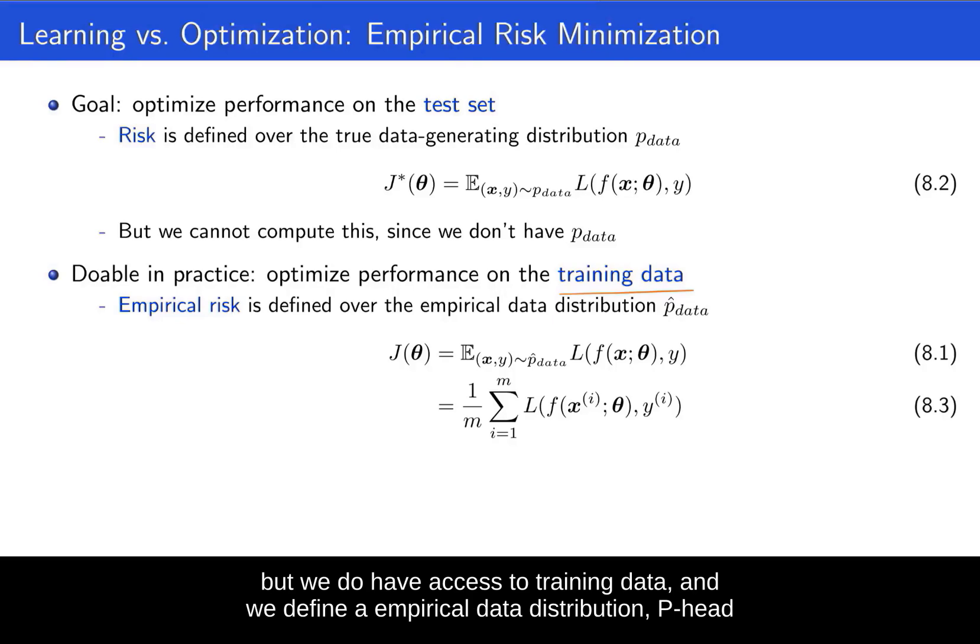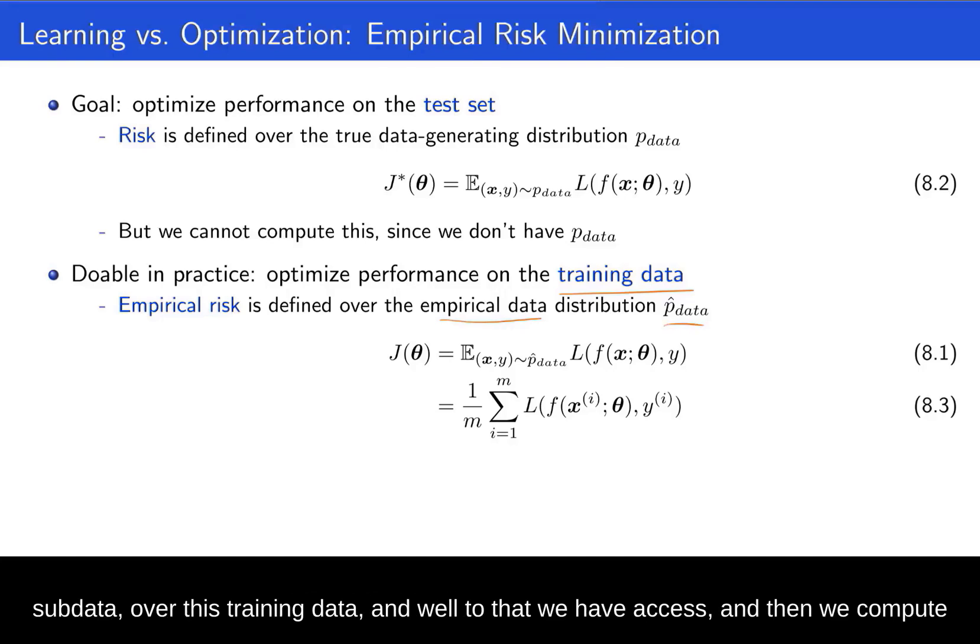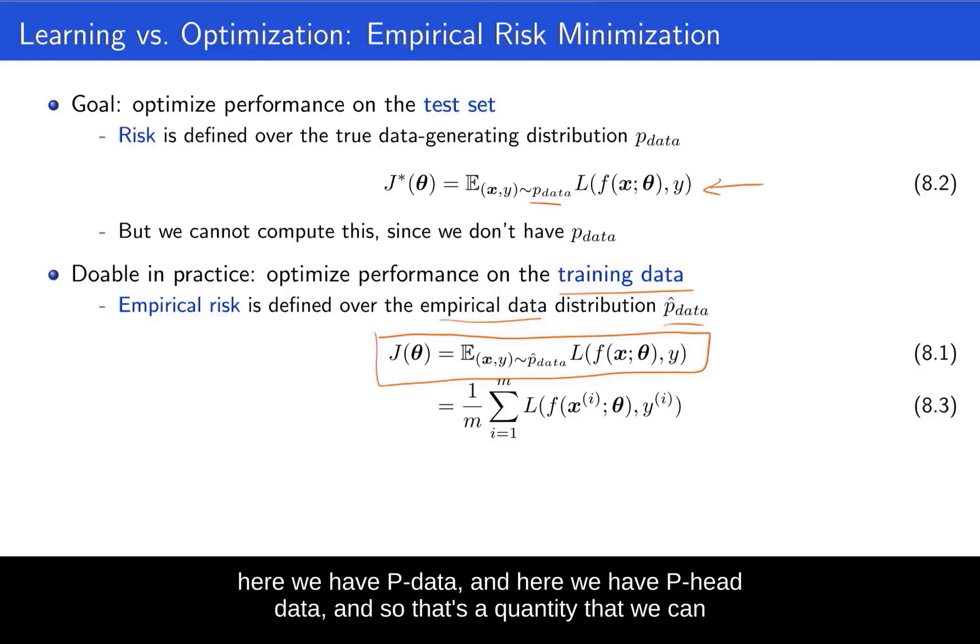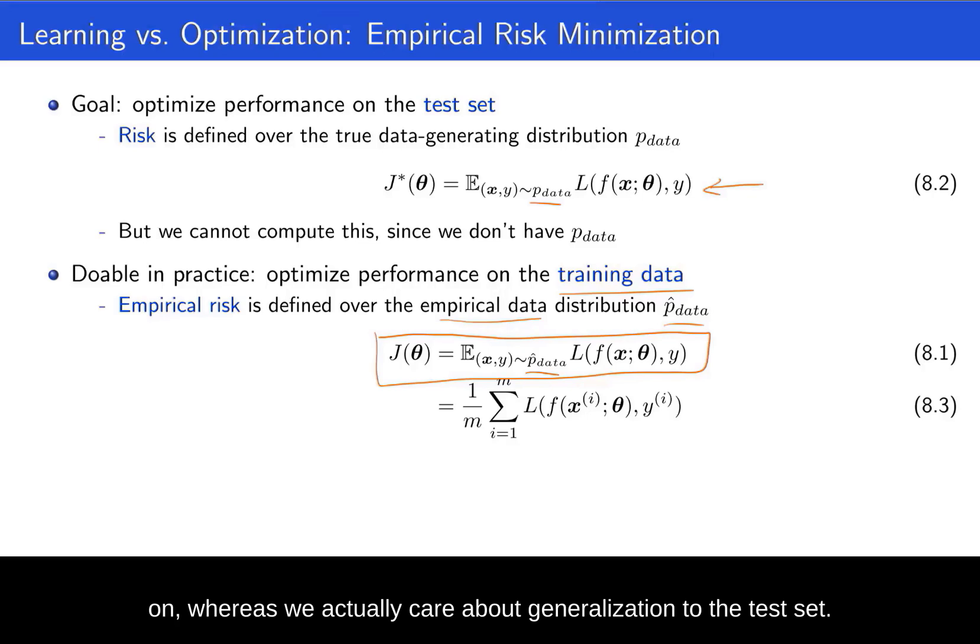But we do have access to training data. And we define an empirical data distribution, p-hat_data, over this training data. And then we compute this empirical risk here, which is just the same as the standard risk, except that here we have p_data, and here we have p-hat_data. And so that's a quantity that we can actually optimize in practice. And so that is what we run our gradient-based optimization on, whereas we actually care about generalization to the test set.